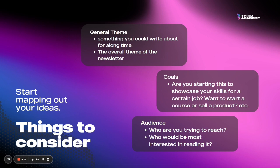The first thing to consider is your general theme — something you could write about for a long time, something you're not going to get bored with. You can choose one general theme and then have niche subtopics. For example, I personally run a newsletter called Invisible Landscape, which is about technology and culture, with subtopics like cryptocurrency, web3, and creatives coming together to use those tools.